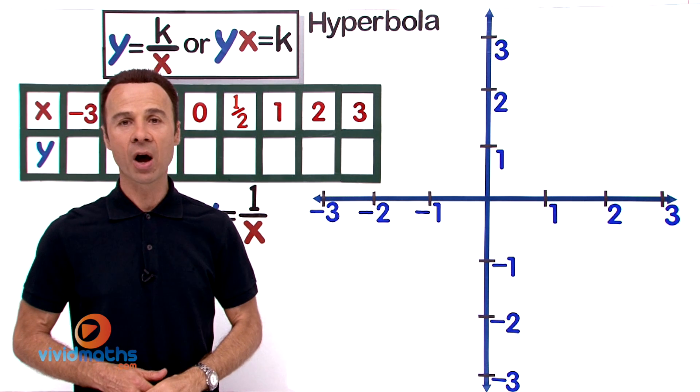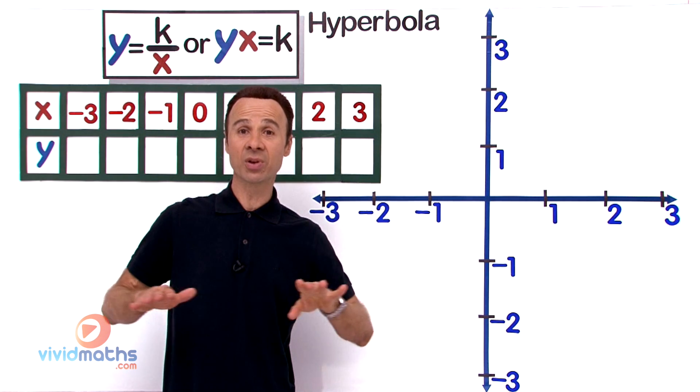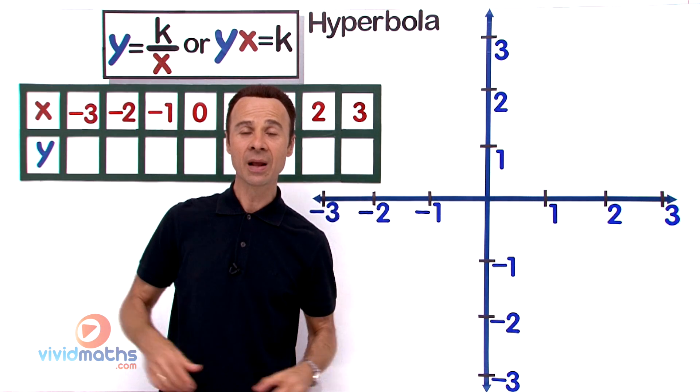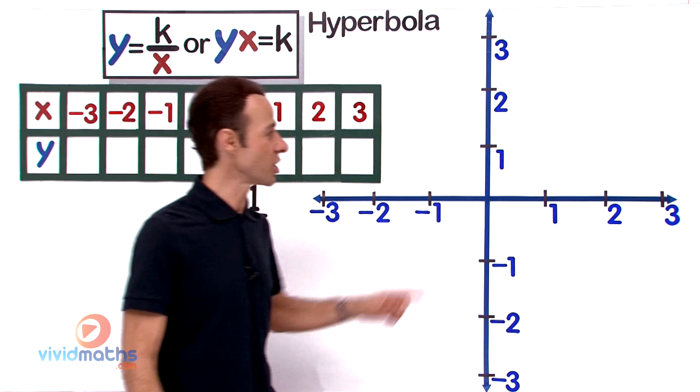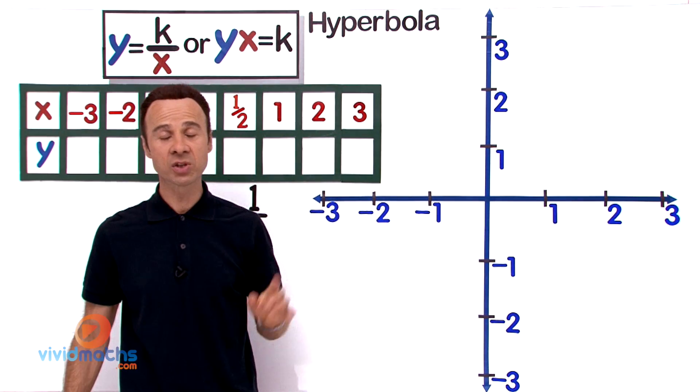Now the elements of a hyperbola or hyperbolic equation are that it is not a smooth continuous curve. It is broken up into two parts. They are separated, they are of the same shape and size, and they generally don't touch the y-axis or the x-axis but they do approach them.